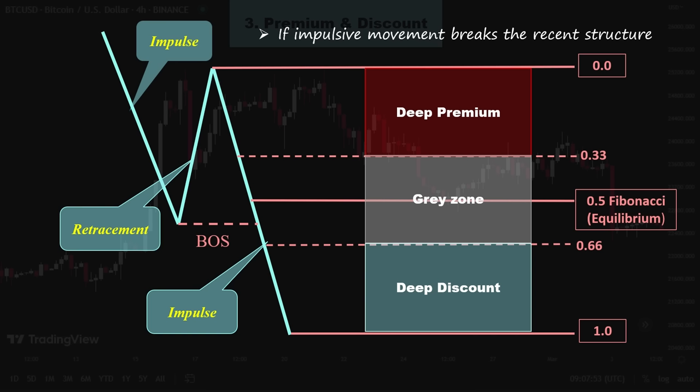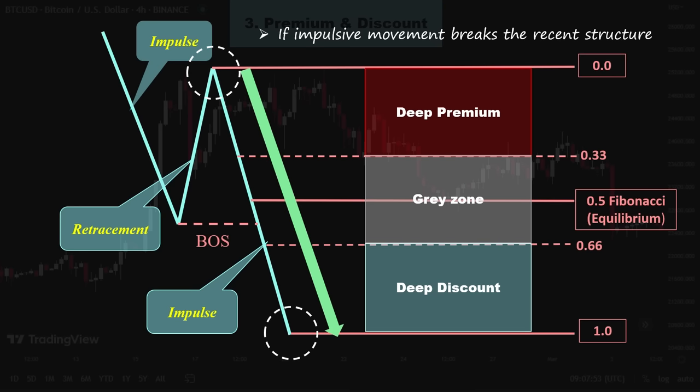The red section on the chart indicates that the price is in a deep premium zone, which is a good opportunity to sell. On the other hand, the blue section represents a deep discount zone, where it is better to look for buy opportunities. It is not recommended to buy in the red or sell in the blue zone, as the price could easily reverse and take out traders' stops due to low liquidity during big moves. It is relatively safer to trade in the gray area, but the closer you get to the premium or discount zone, the riskier it becomes to do the opposite of the zone colors. To draw the premium and discount zones in a bearish scenario, the Fibonacci tool is pulled from the start of the impulsive movement to the end of it. The same concept applies in a bullish scenario.